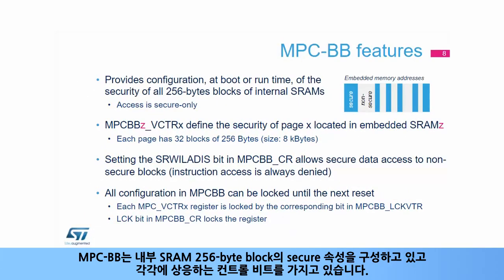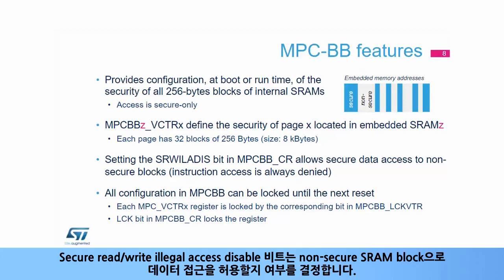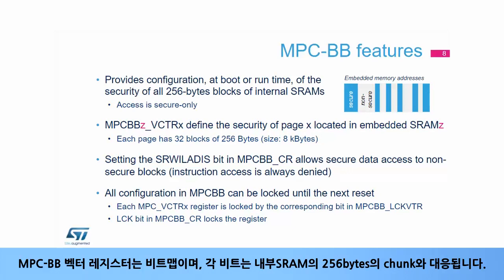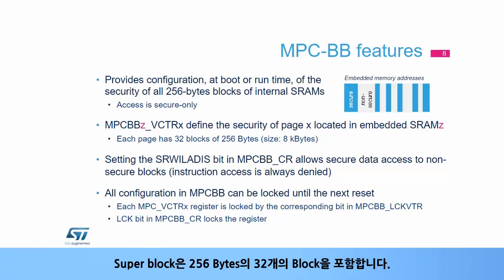The MPC block-based controller configures the secure attribute of internal SRAM 256-byte blocks, and each of them has a corresponding control bit. The MPCBB is only accessible in secure state. MPCBB_CR is a control register. The secure read-write illegal access disabled bit determines whether secure data accesses are permitted to non-secure SRAM blocks. The MPCBB vector registers are bitmaps, each bit corresponding to an internal SRAM chunk of 256 bytes. Each bit in the MPCBB log vector registers logs the secure mode of the corresponding 8-kilobyte superblock until the next reset. A superblock contains 32 blocks of 256 bytes.